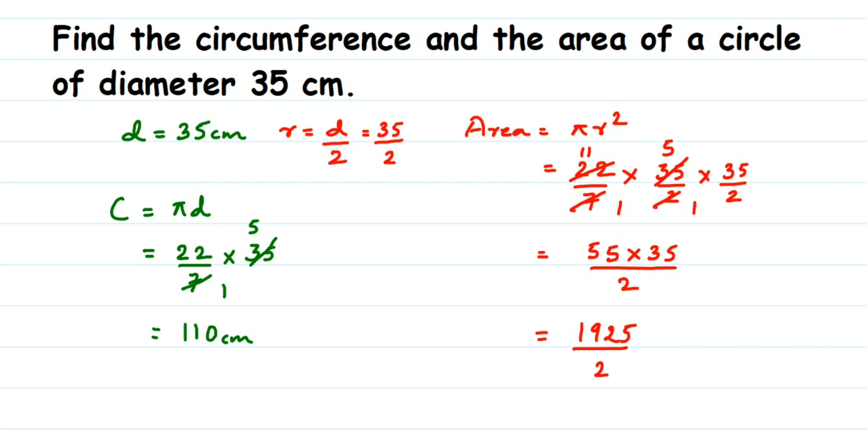1925 divided by 2. Obviously this number will not get cancelled by 2 because the number is odd, so we're going to get the answer in decimal. When you divide this number by 2, you're going to get the answer as 962.5. Since it is an area, the units will be centimeter square. So that's it.